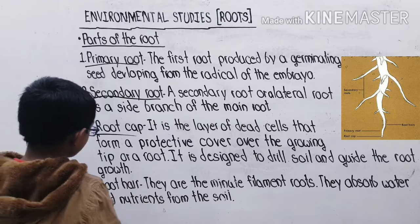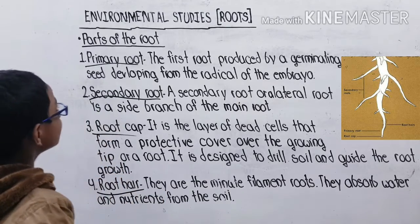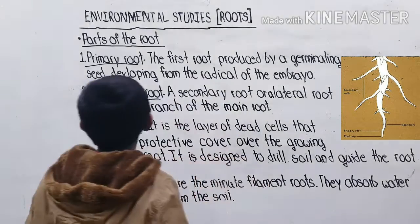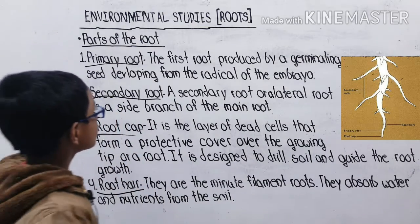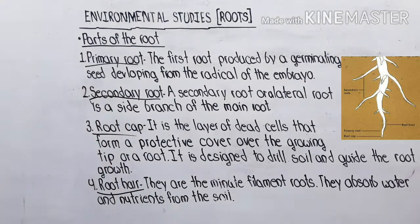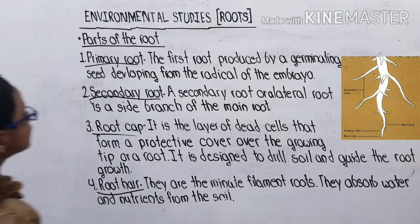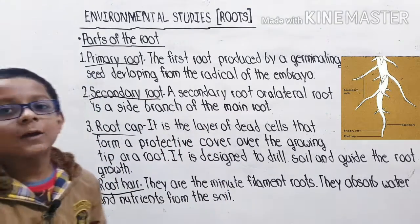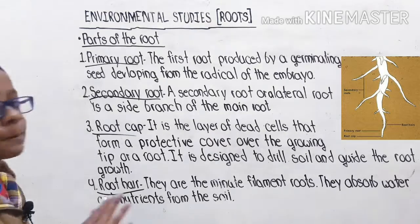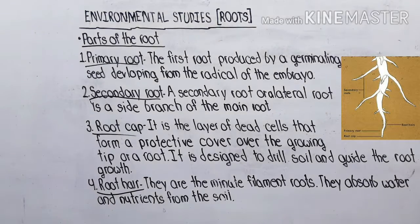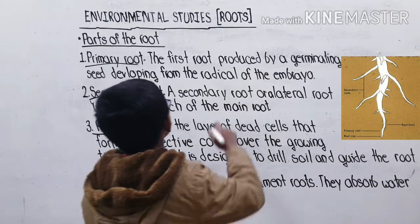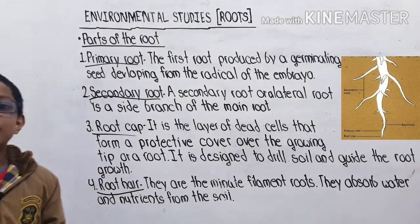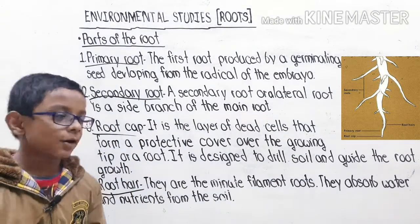Primary root: it is the first root produced by a germinating seed, developing from the radical of the embryo. Primary root wo hota hai jo germinating seed se sabse pehla root hota hai, developing from the radical of the embryo.